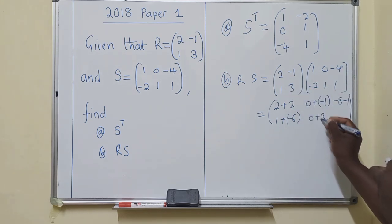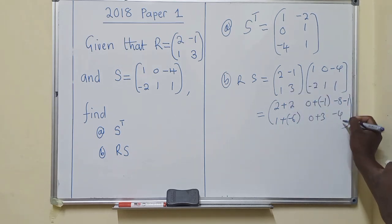There we have a 3. Here, negative 4. Here, plus a 3.